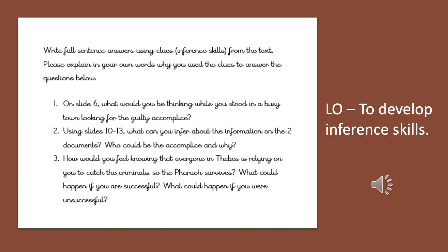Write rightful sentence answers using clues and inference skills from the text. Number one: on slide six, what would you be thinking while you stood in a busy town looking for the guilty accomplice? Number two: using slides 10 to 13, what can you infer about the information on the two documents — who could be the accomplice and why? Number three: how would you feel knowing that someone in Thebes is relying on you to catch the criminals so the pharaoh survives? What could happen if you were successful? What could happen if you were unsuccessful?